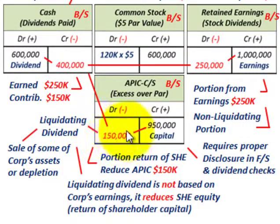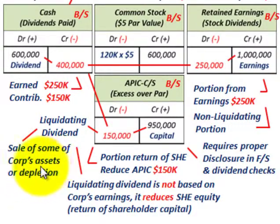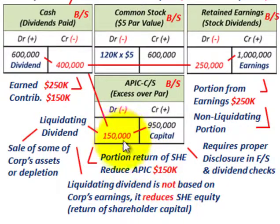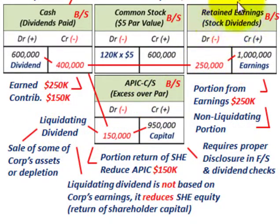The reason a company might declare a liquidating dividend could be a sale of some of the corporation's assets, or the corporation may be a natural resources company with depletion of resources. They declare that part of their contributed capital is part of the dividends paid to common stock shareholders. This liquidating dividend is not based on the corporation's earnings — it reduces shareholders' equity, specifically the contributed capital. It does not involve any retained earnings or earned capital.